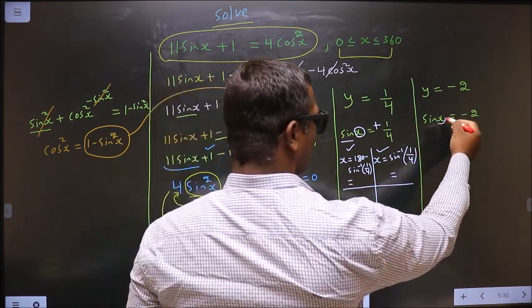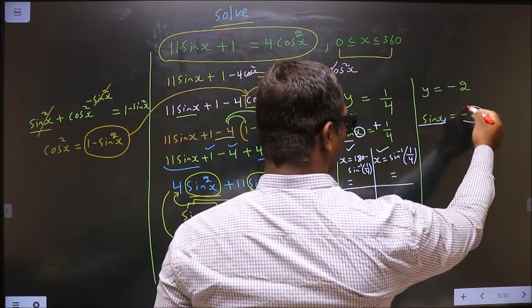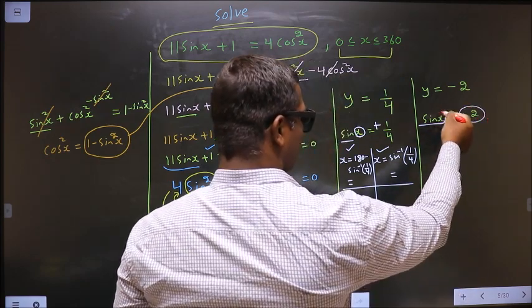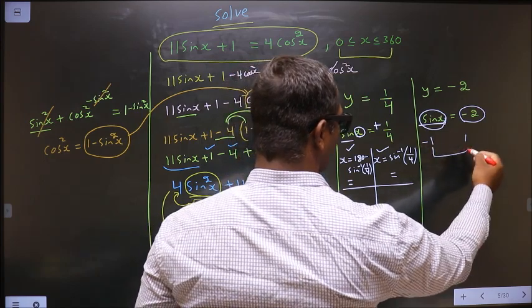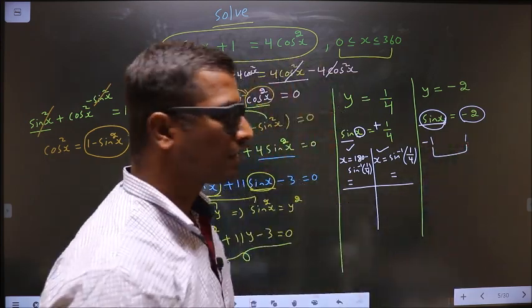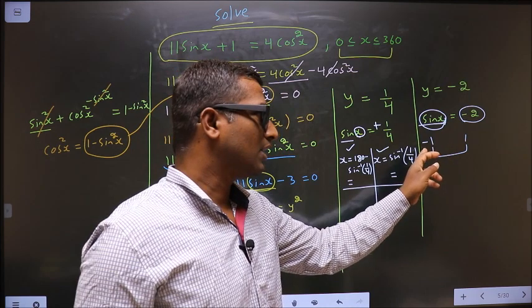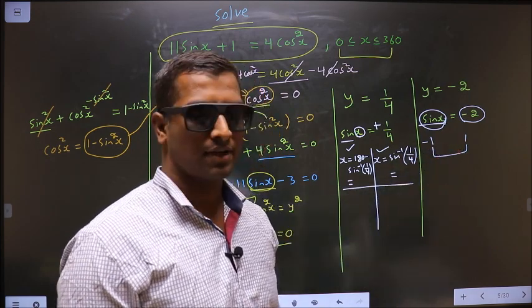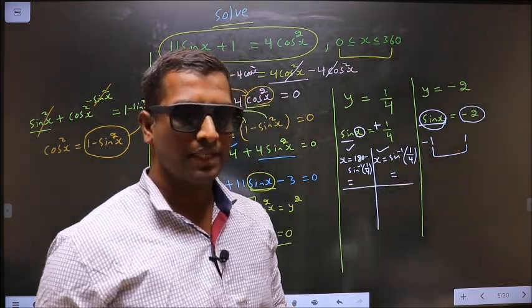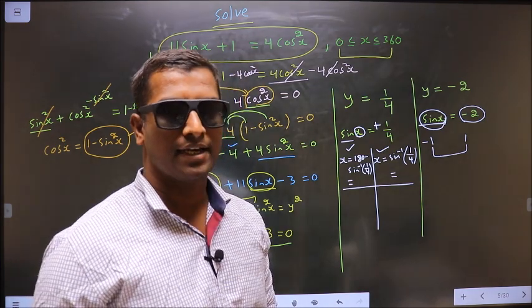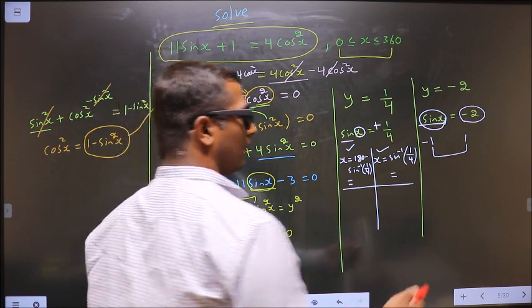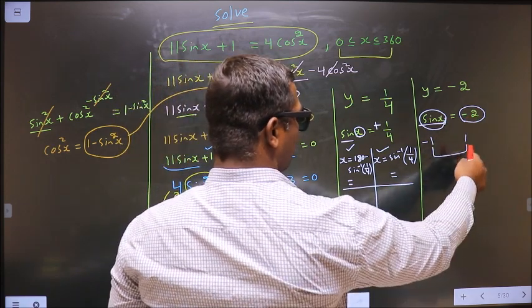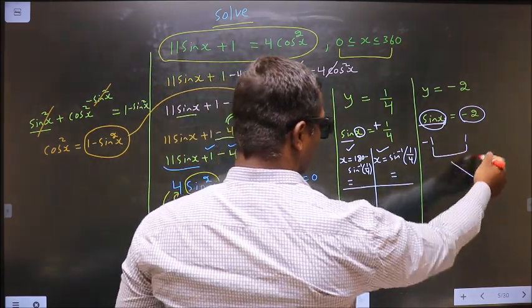Here you have sin x equal to minus 2. But sin x values should always lie between minus 1 and plus 1. Minus 2 does not lie between minus 1 and plus 1. That means I do not get any value for x such that sin x equal to minus 2. This does not lie between these two, so you neglect this.